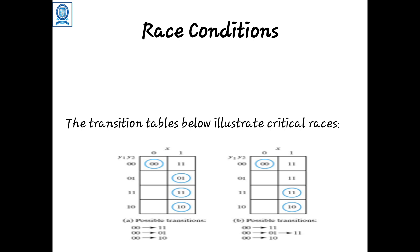In a transition table, let x be the input variable and y1, y2 be the state variables. Consider the initial condition y1 y2 = 00 and x = 0. With a change in input from 0 to 1, state variables may change simultaneously from 00 to 11, or in sequence: 00 to 01 then to 11, or 00 to 10 then to 11. In all cases the final state is 11, so this is a non-critical race condition.